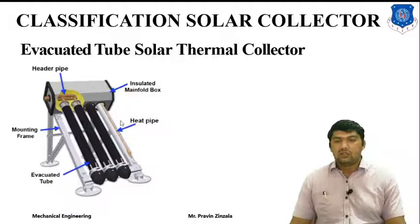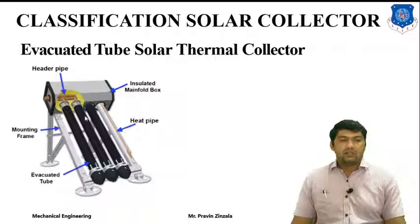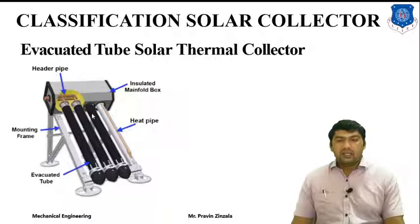There are two types of evacuated tube collectors — direct contact type and indirect contact type. In the direct contact type, water generally passes through the inner tube directly. In the indirect contact type, the working fluid — such as a water-glycol mixture — indirectly contacts the water. It continuously evaporates when solar radiation is received and condenses as it gives up heat to the cold water. It then returns to the bottom and the process is carried out continuously.